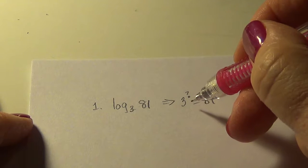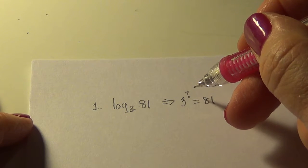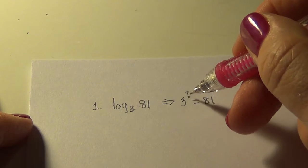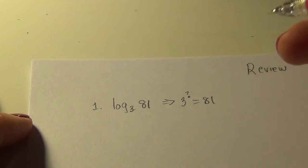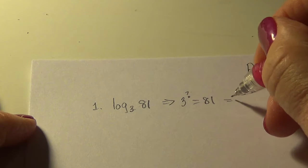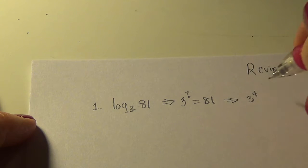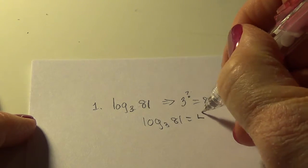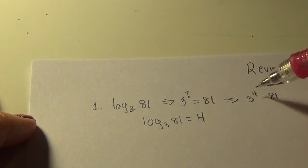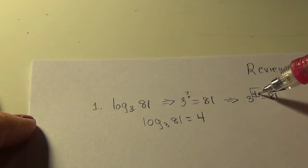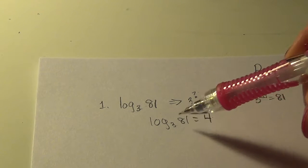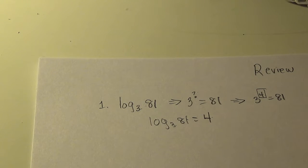Well, three times three, which is three to the two is nine. Three times three times three, which is three to the three is 27. So you can probably see three to the four is 81. So we say log to the base three of 81 is four. It is the exponent. A log is just an exponent. And it's the exponent I give this number to get that one.